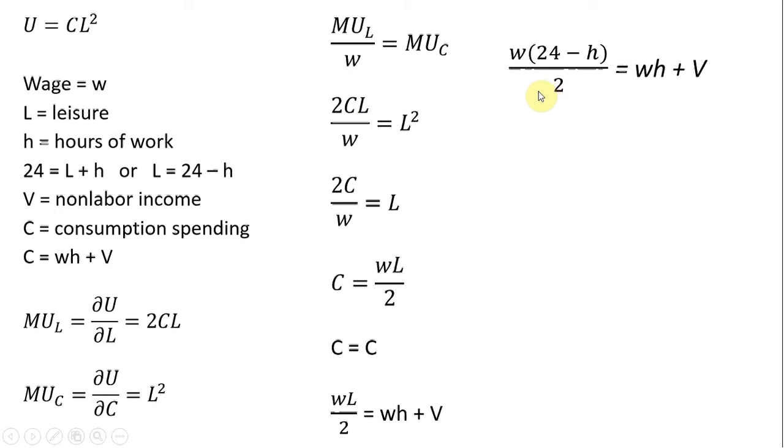I'm going to multiply through by 2, so we have this 2 now appearing on the right-hand side, and then W times 24, W times minus H. We're going to solve for H. So adding a plus WH to both sides, we get 3WH.